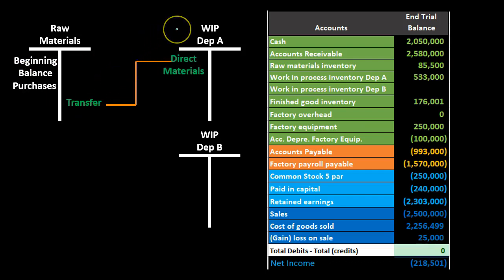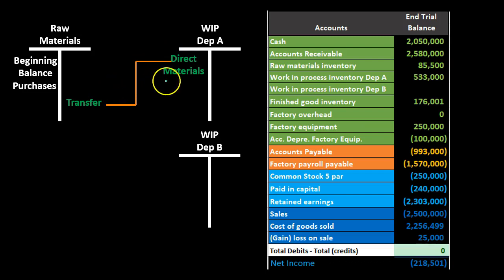The debit goes to the work in process account. For candy manufacturing, materials like sugar would typically go into Department A, where the candy is made, and then the product moves to Department B, the packaging department. Most materials go to Department A and then transfer to Department B once the conversion from sugar to candy is complete.